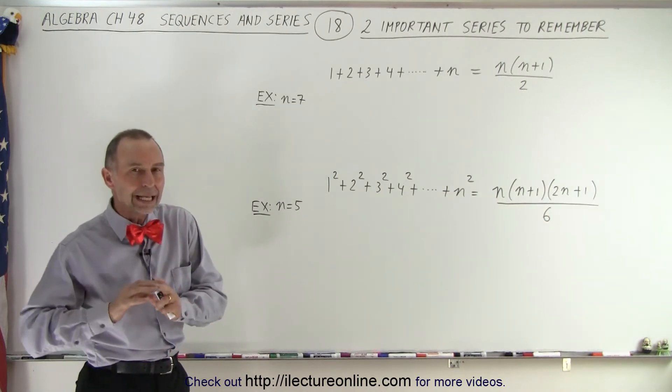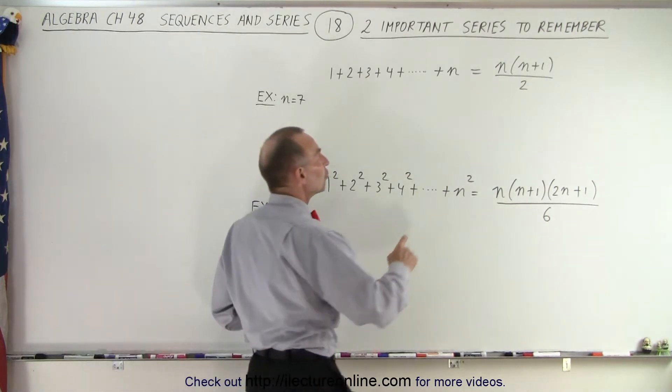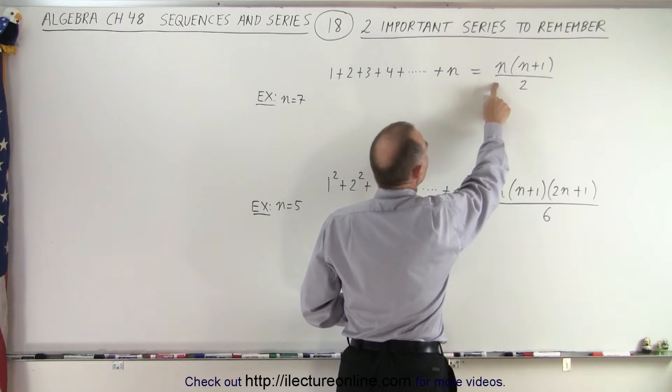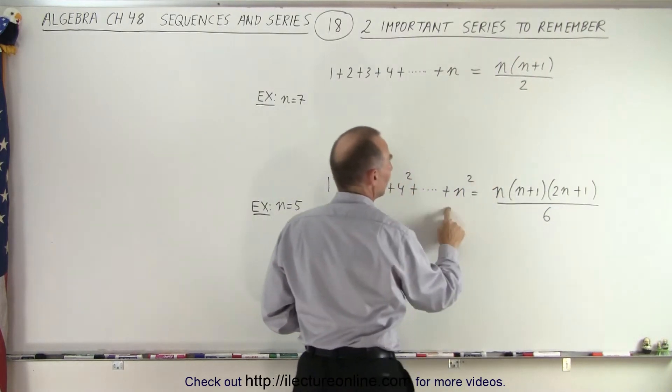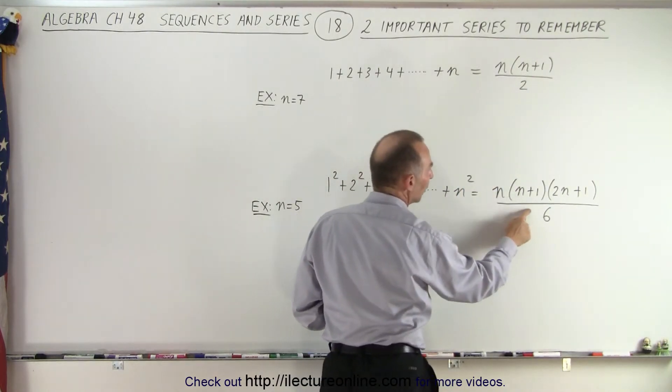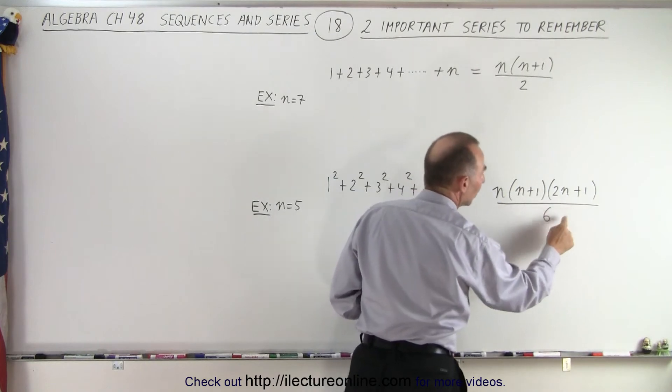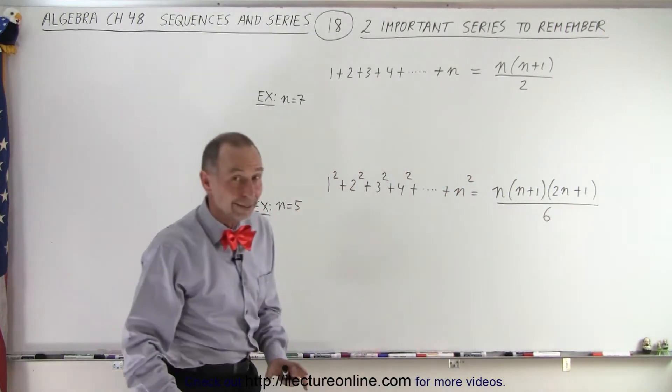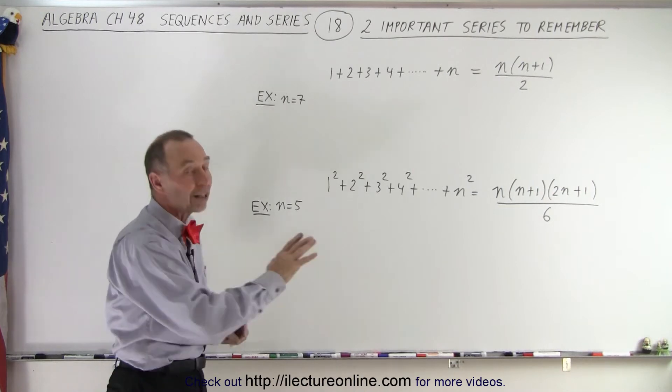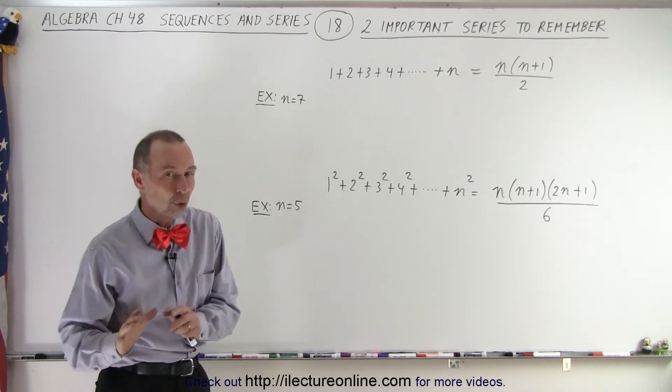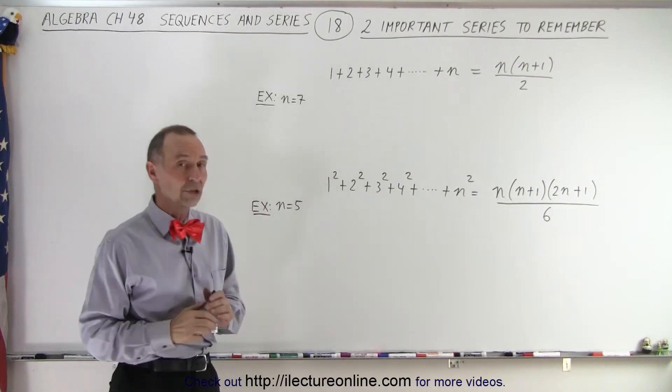Well, it can be written in a short formula equation. This is equal to n times n plus 1 over 2, and this is equal to n times n plus 1 times 2n plus 1 divided by 6. It seems strange but it's true and it doesn't matter what the value of n is. Later on we'll show you how to derive that equation.